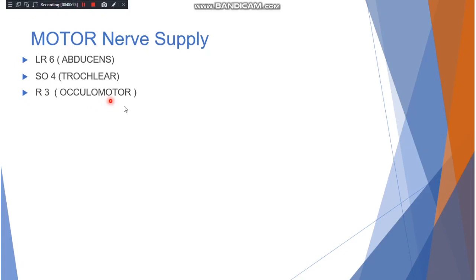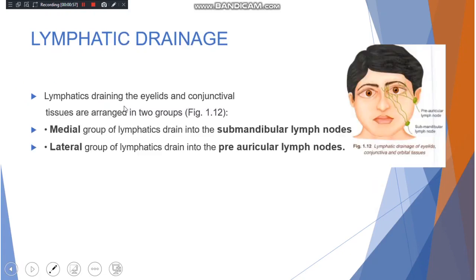The lymphatics draining the eyelids and conjunctival tissues are arranged in two groups. As you can appreciate in this diagram, the medial group of lymphatics drains into the submandibular lymph nodes, and the lateral group of lymphatics drains into the preauricular lymph node. That was all about the nerve supply of the eye and the lymphatic drainage.